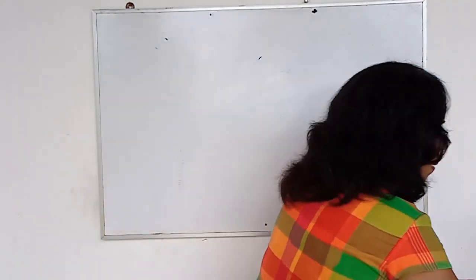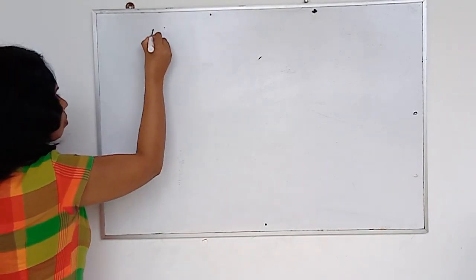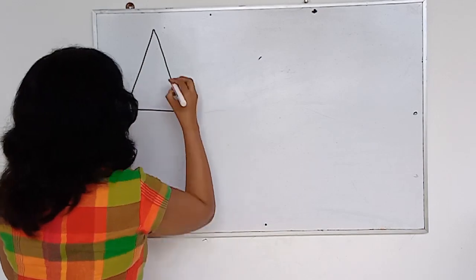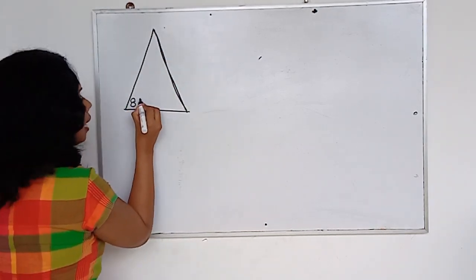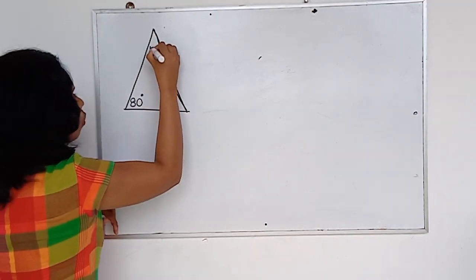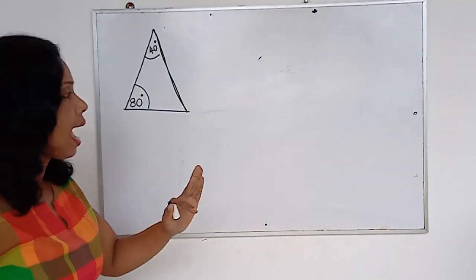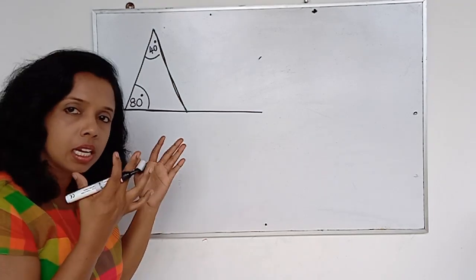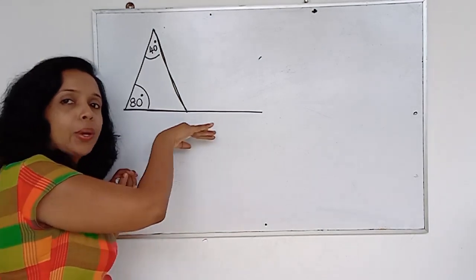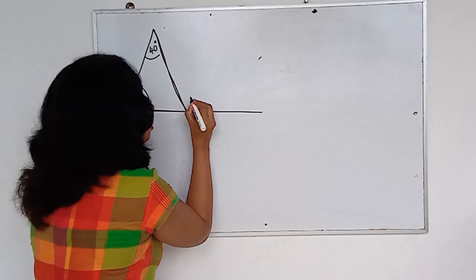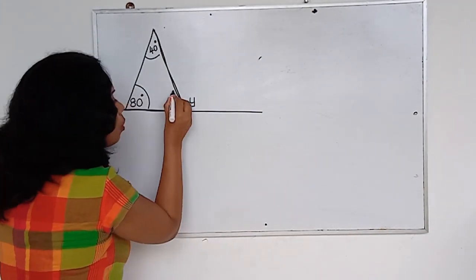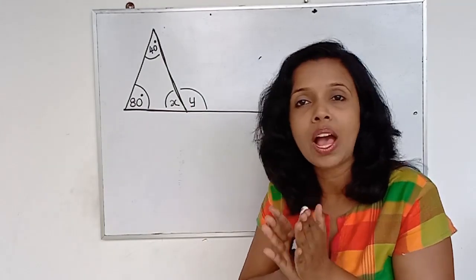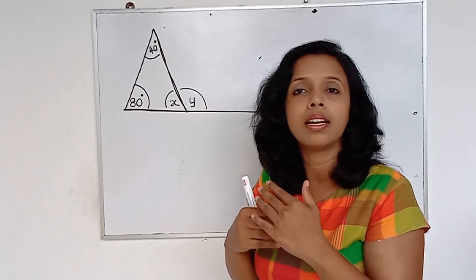Now the second theory related to triangles. Let's say they have given a triangle where this angle is 80 degrees and this is 40 degrees. I extended one side, creating an external angle — let's name it y — and the internal angle I don't know, call it x. Based on theories learned so far, we can arrive at another theory.